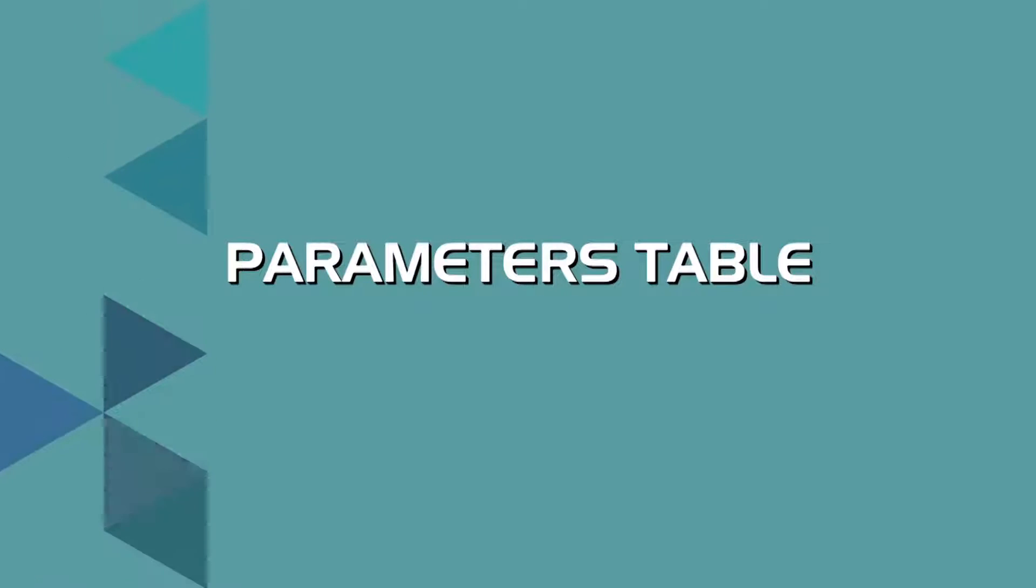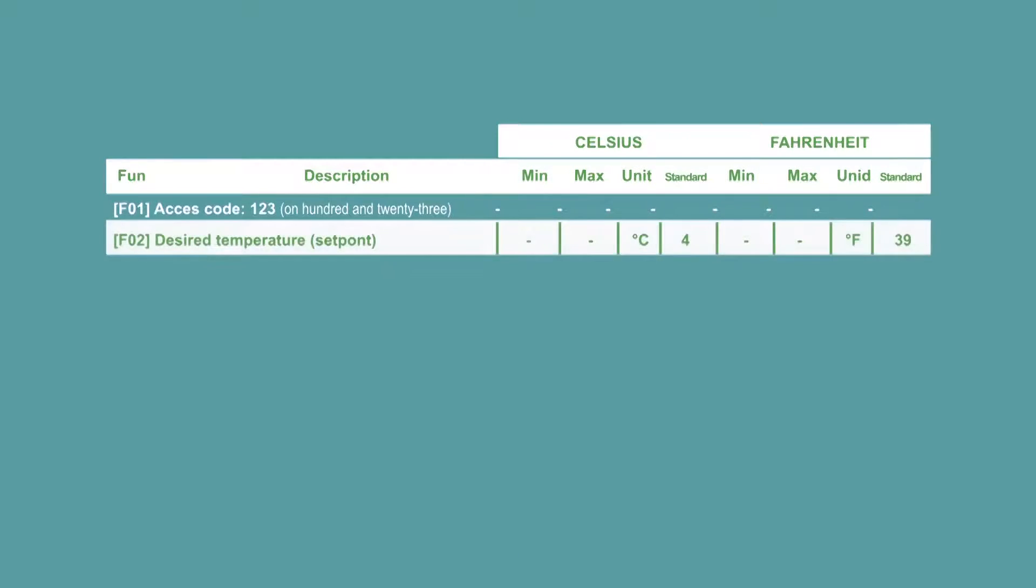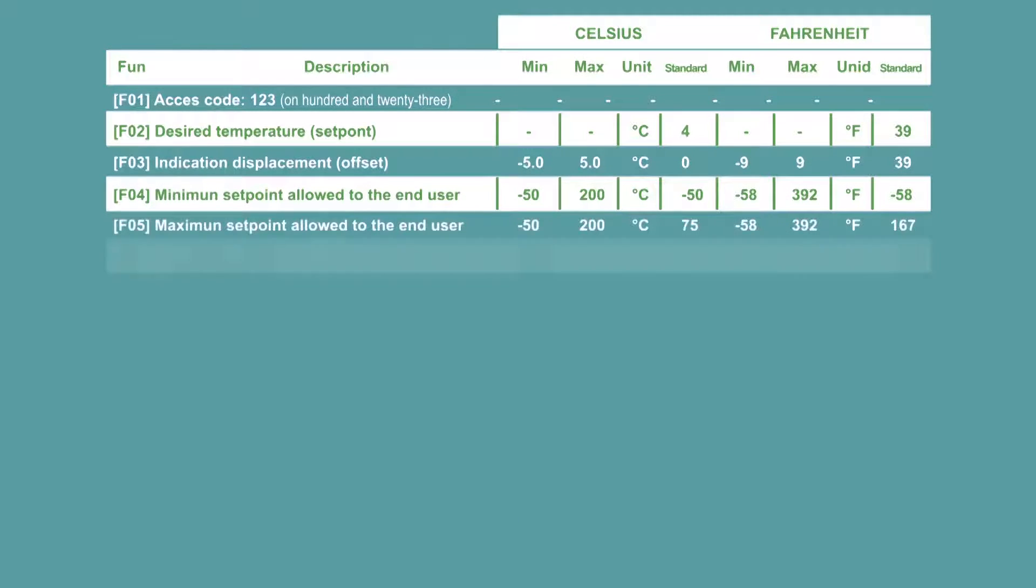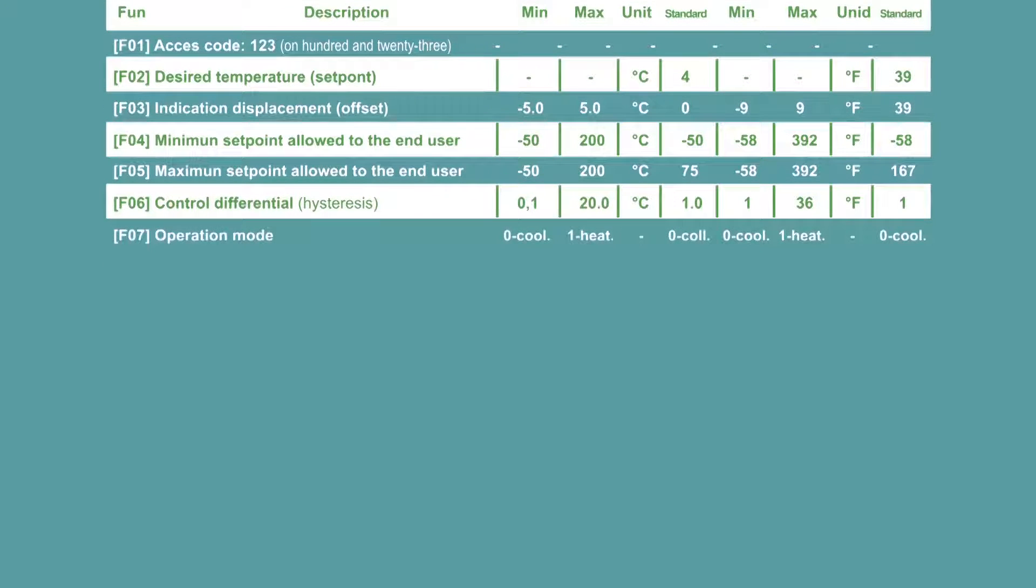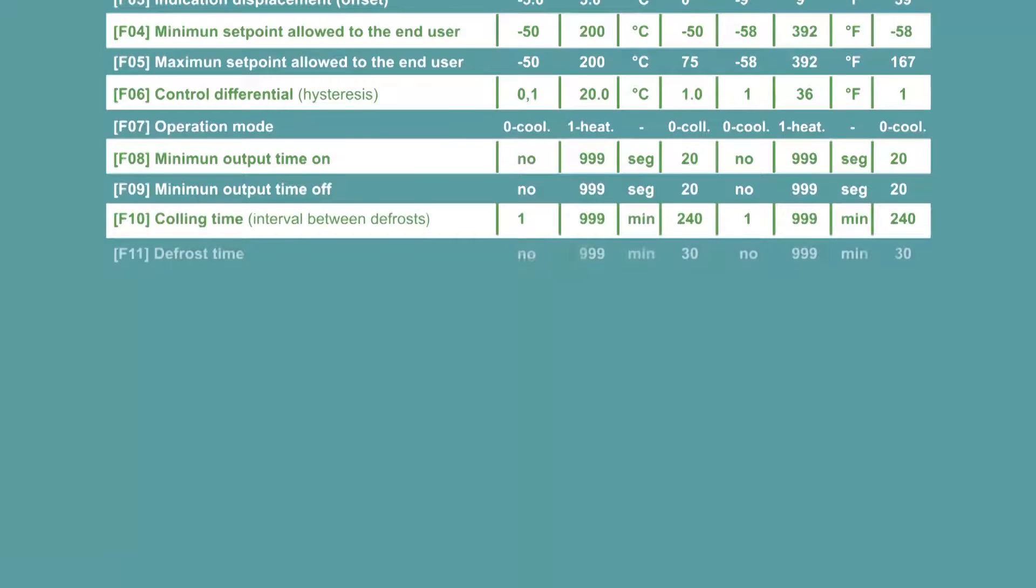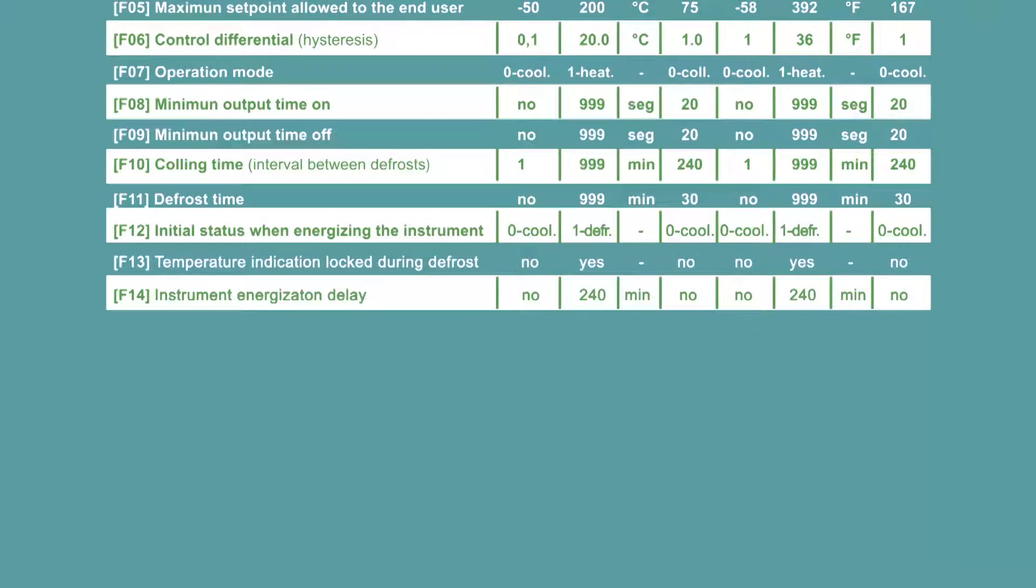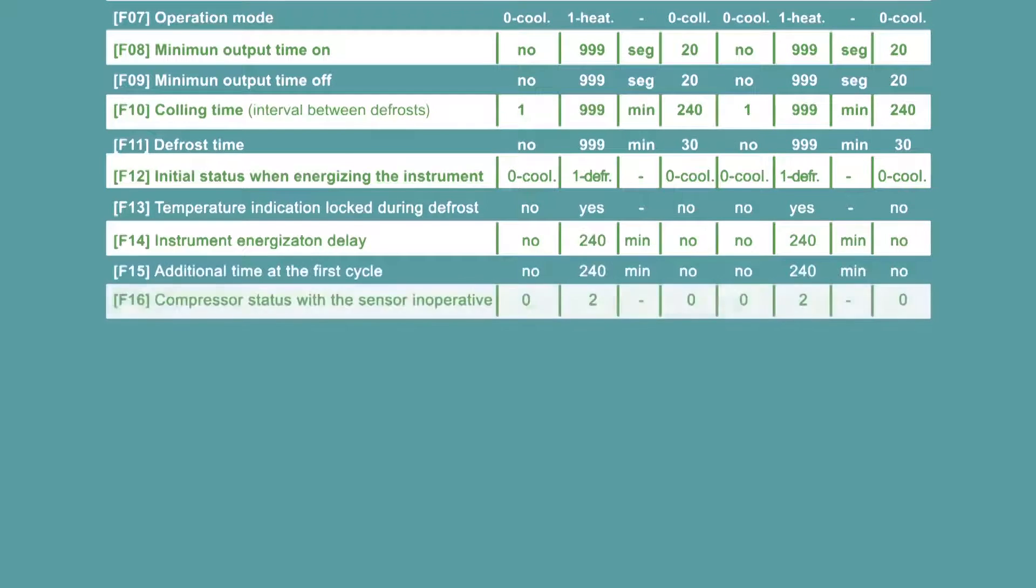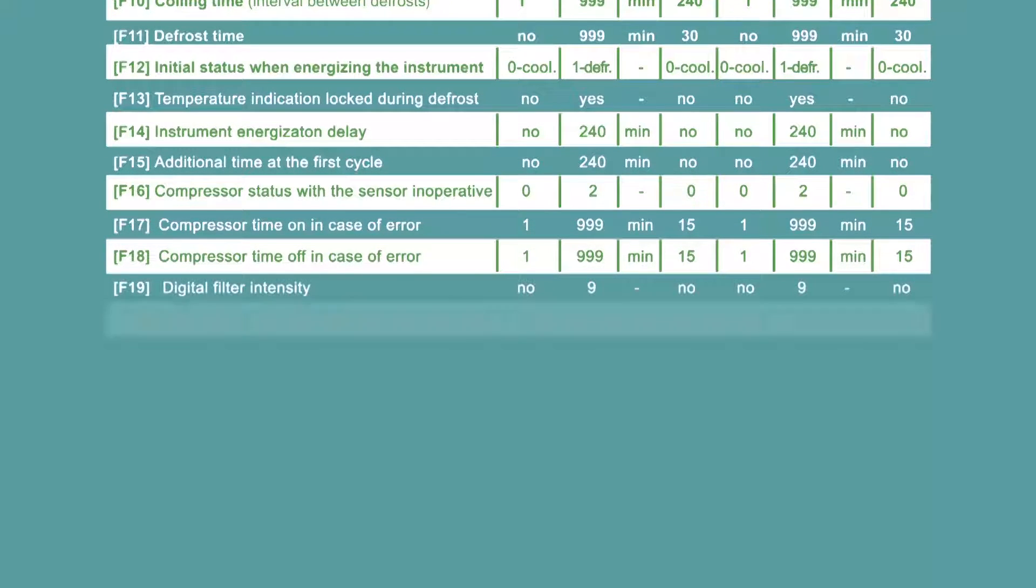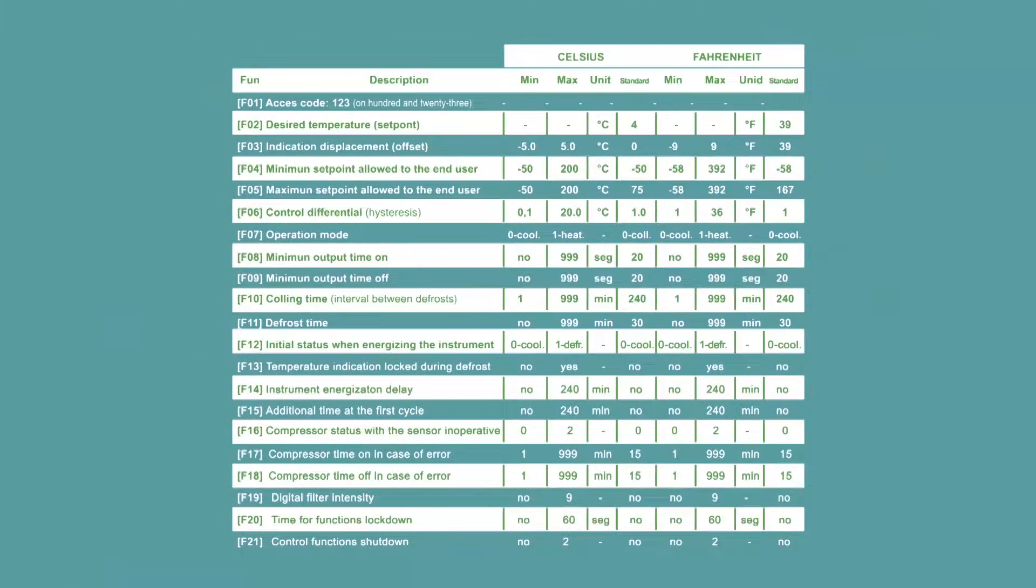Parameters table. In the user's manual, you can find the instrument's parameter table with the description of all the functions that are unlocked through the access code. It lists the parameters with its description and set of values, minimum and maximum, for Celsius and Fahrenheit units. Important. Specified in the right column are the factory default parameters. Set these values according to your needs or application within the minimum and maximum range of each function.